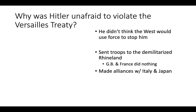So why was Hitler unafraid to violate the Versailles Treaty? He didn't think the West would use force to stop him, and primarily he was right at the beginning. Nobody wanted to get back into a war, nobody wanted another world war. He sent troops in to demilitarize the Rhineland — remember, Great Britain and France had their military down there occupying those areas. He goes in, kicks them out, and the West does nothing. Other European powers do nothing, they just watch. Next, he makes alliances with Italy and Japan, again in violation of the Versailles Treaty, and again nobody does anything.